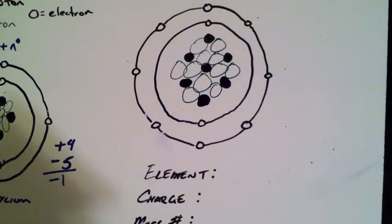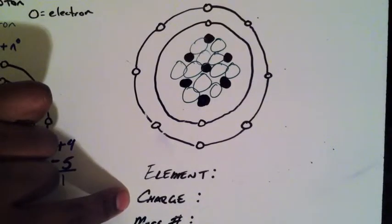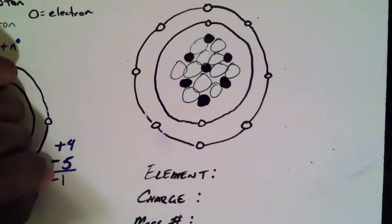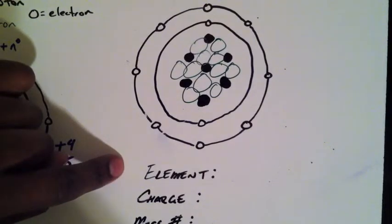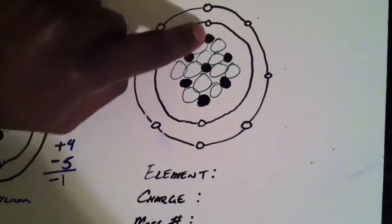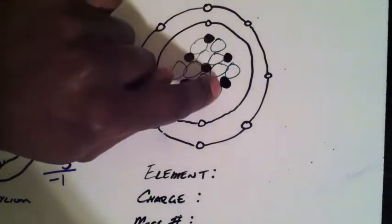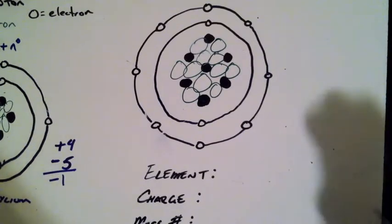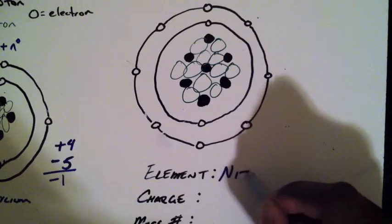Let's do another example. Pause for a moment right here and see if you can come up with which element this is, what the charge is, and the mass number. If you count correctly, you'll see that you have one, two, three, four, five, six, seven protons, so this element has an atomic number of seven. Element number seven on the periodic table is nitrogen.